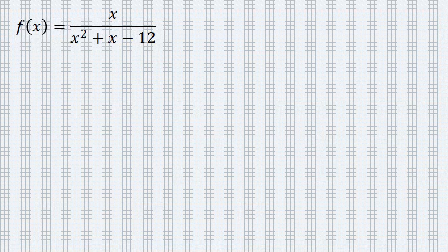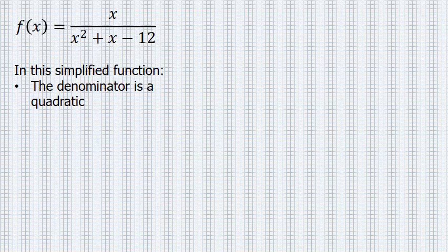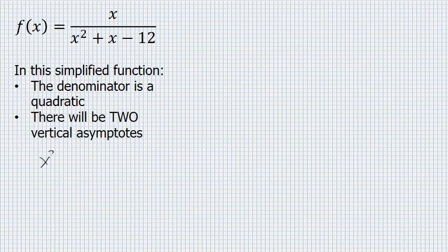In the function f of x equals x over x squared plus x minus 12, this is a simplified function, and the denominator is a quadratic. This means there will be two vertical asymptotes, because setting x squared plus x minus 12 equal to 0 will have two solutions.